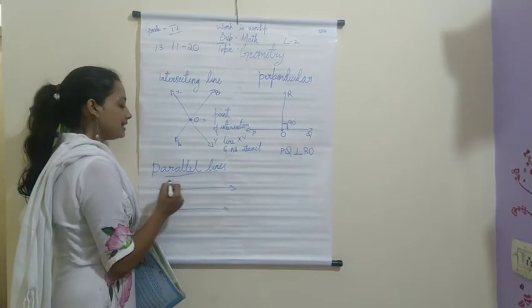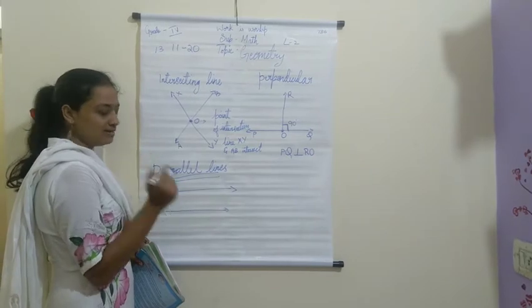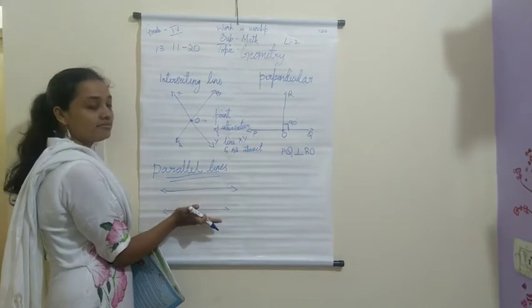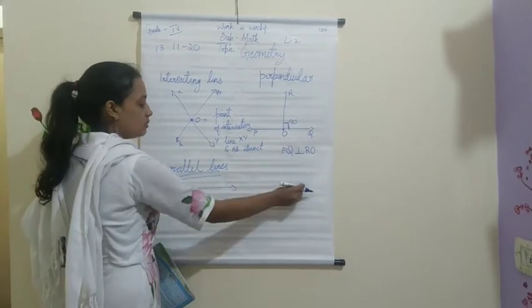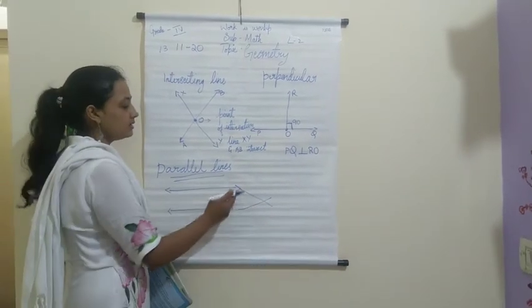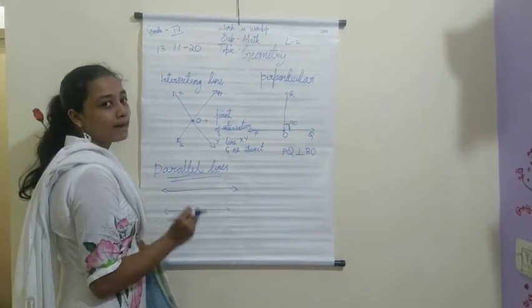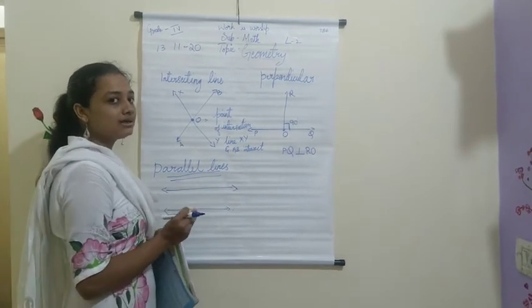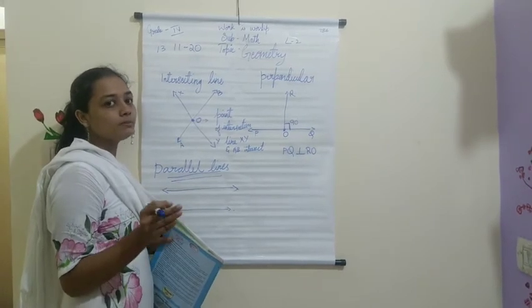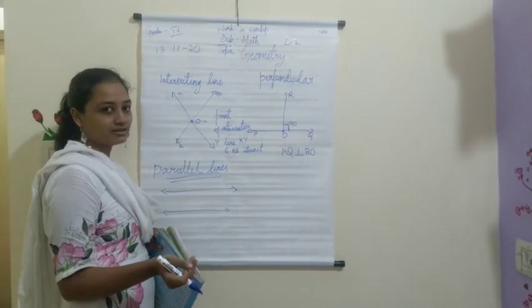Now we have parallel lines. In parallel lines, you have two lines which are parallel to each other — they are in the same direction. Even if you extend them in both ways, they will never meet each other. Such lines are called parallel lines. For example, a railway track: both tracks of the rail will never meet each other at any point — that is also called parallel lines.